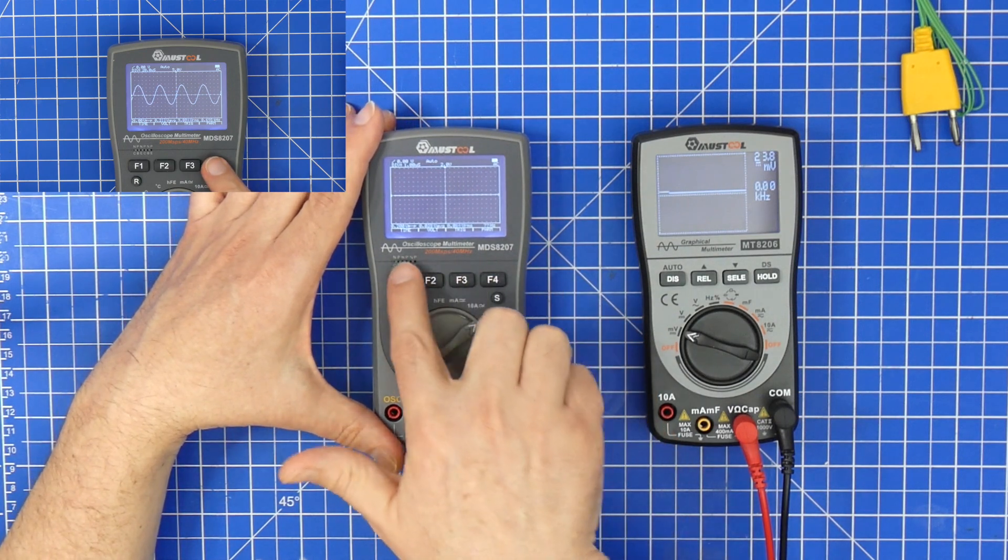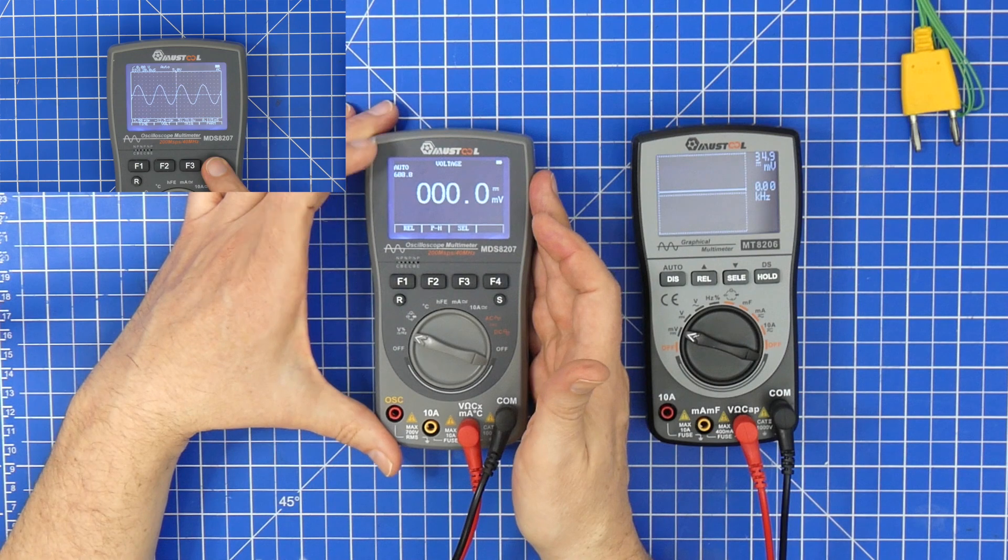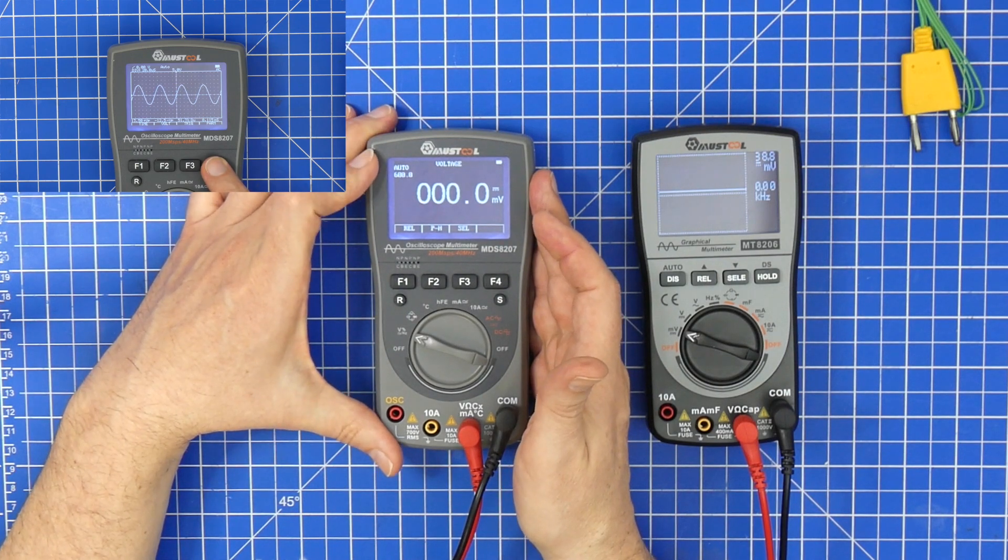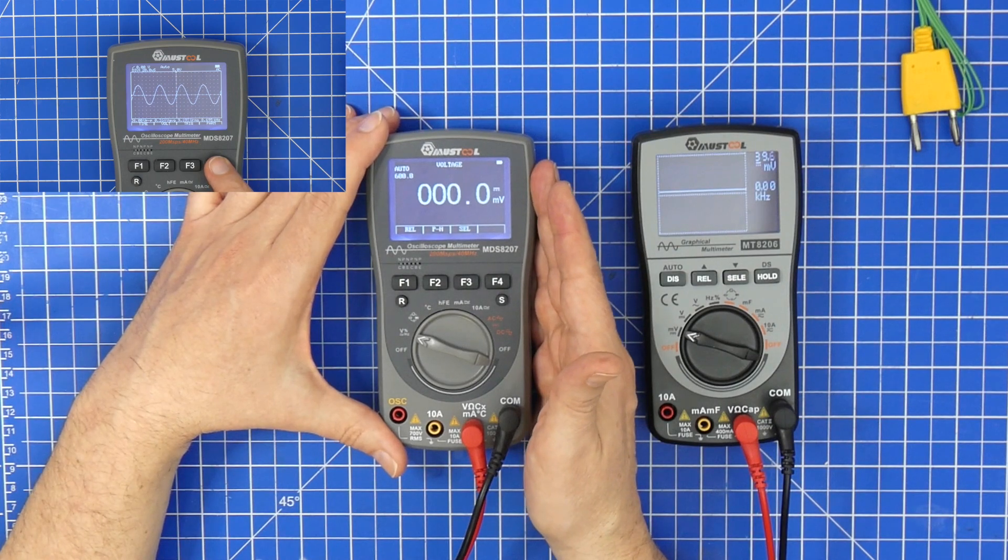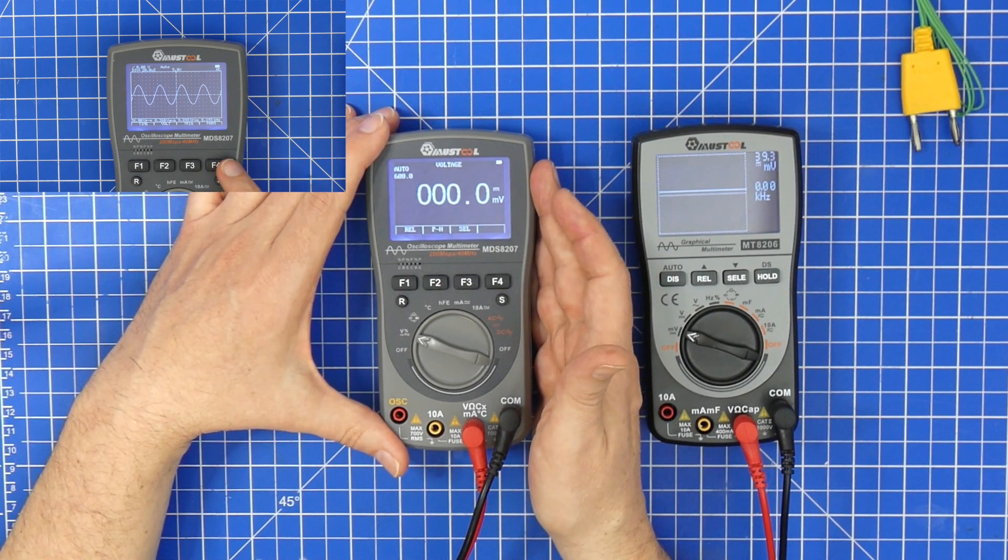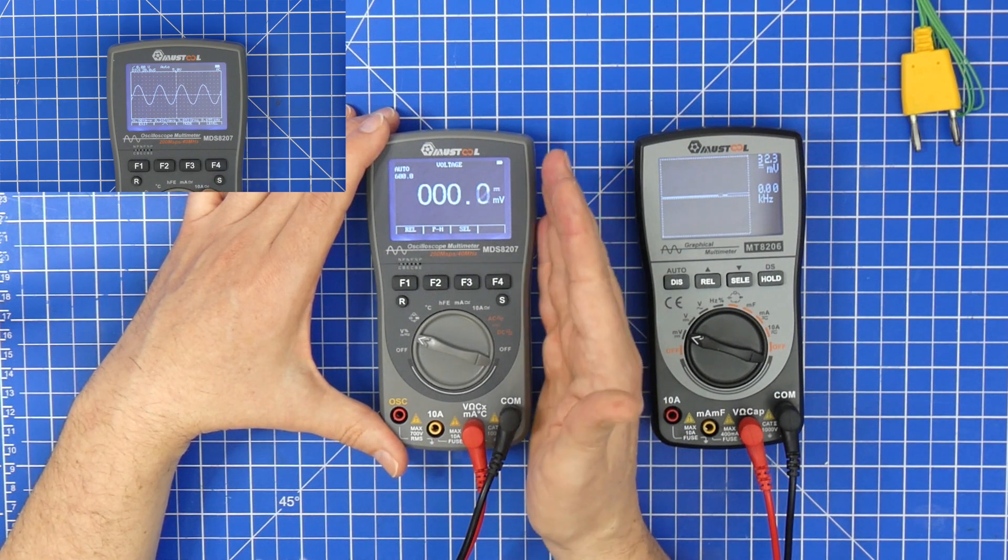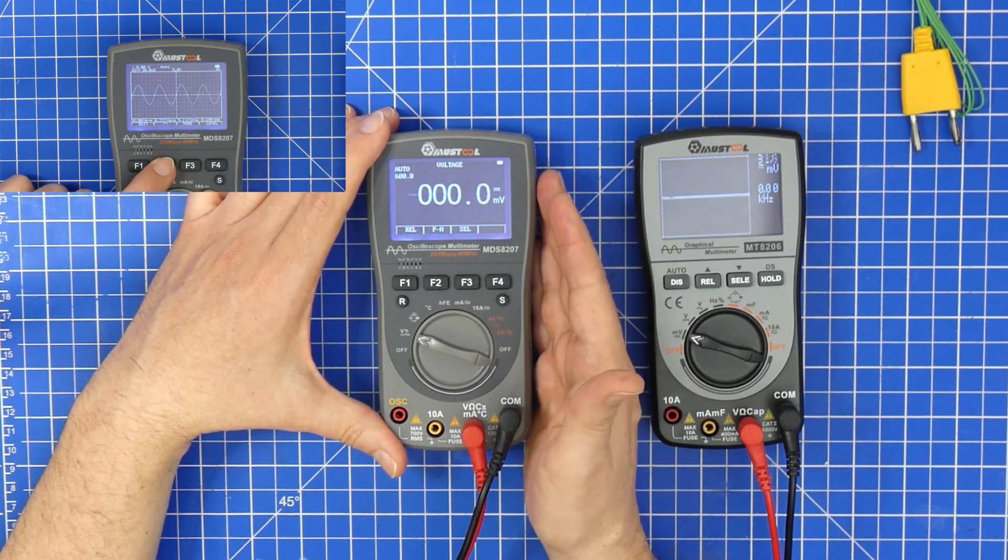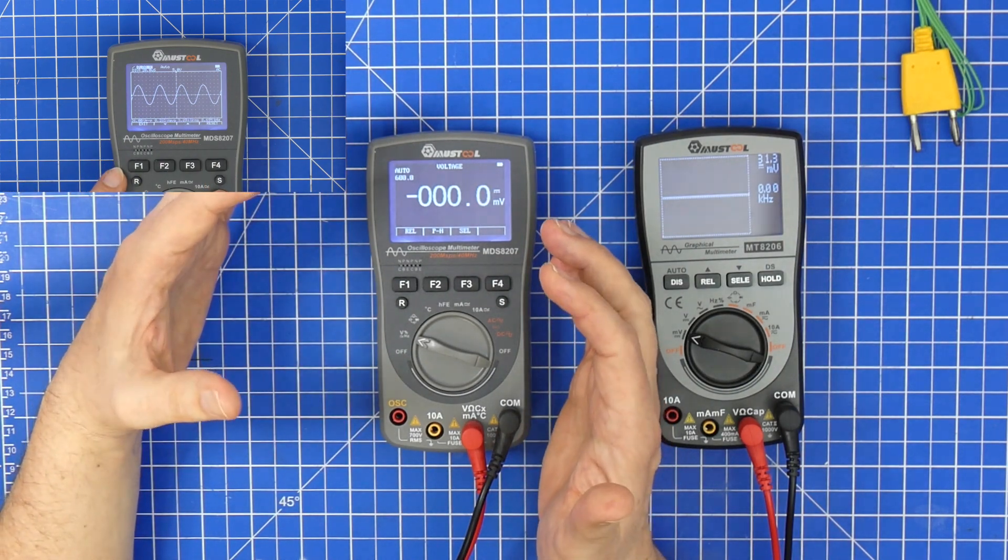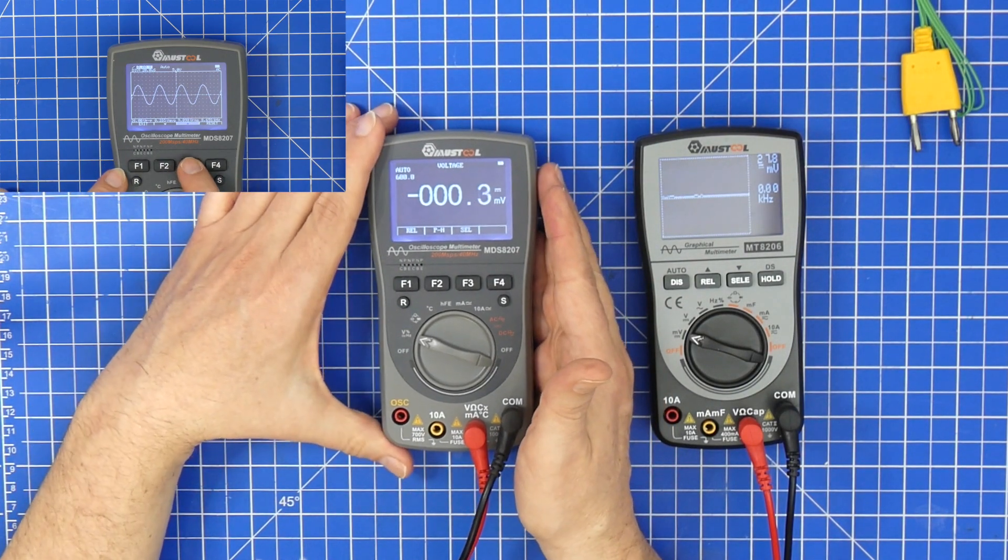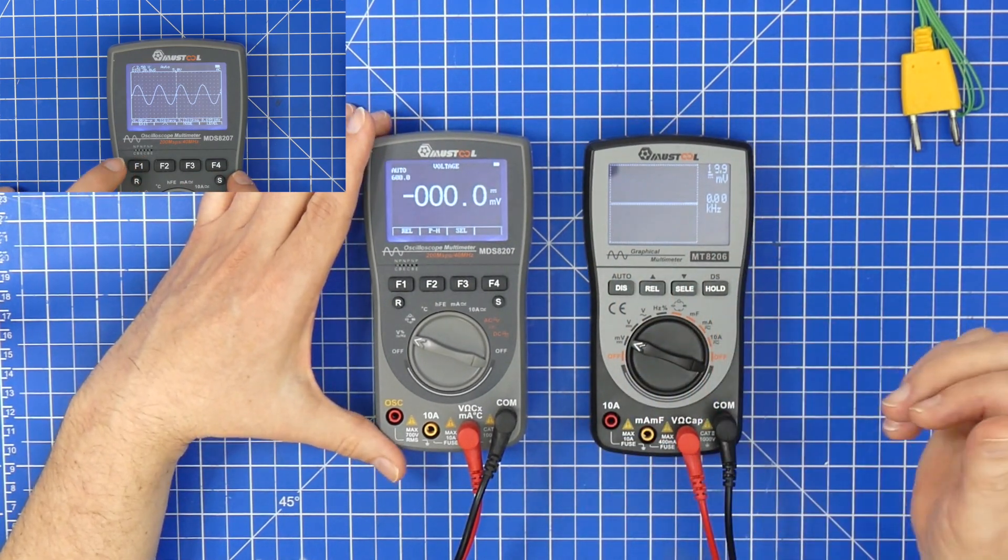You can switch off the automatic modes for ranges, you can have hold, you can have lowest and highest peak, you can even measure differences. And the whole thing is just so super simple at the same time. This thing still has its value, the 8206 can be switched from standard mode into a graphical display mode.